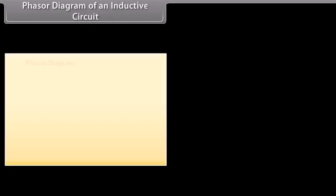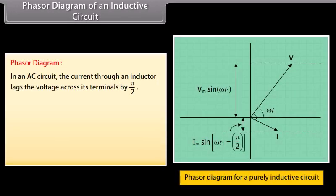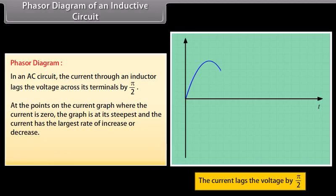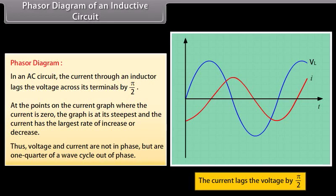Phasor diagram of an inductive circuit: in an AC circuit, the current through an inductor lags the voltage across its terminals by π/2. At points on the current graph where the current is zero, the graph is at its steepest and the current has the largest rate of increase or decrease. Thus, voltage and current are not in phase but are one quarter of a wave cycle out of phase.